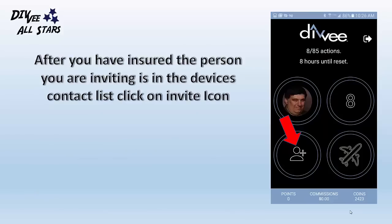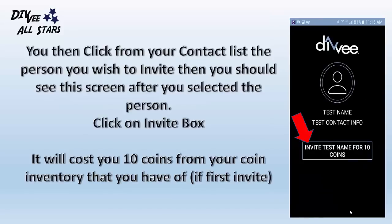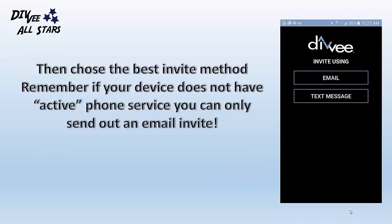Once you have done that, it will take you to a screen shown here. Make sure the person's name — where you see 'Test Name' — is correct, and make sure their contact information is correct. Then click on the invite box. It will cost you 10 coins from your coin inventory. You should have about a thousand coins if this is your first invite code you are sending out. Then choose the best invite method to send them, whether email or text message. Please remember, if your device is on Wi-Fi — whether it's a cell phone or a tablet — and you do not have an active phone service, you can only send out an email invite.